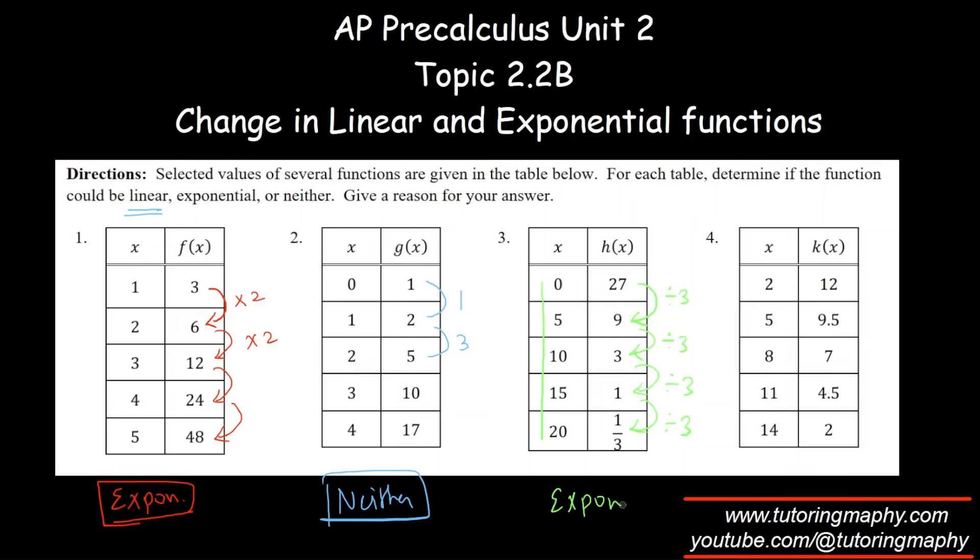Finally this one: 2, 5, 8, 11, 14—yes, increasing by 3. And the difference: 9.5 minus 12 is negative 2.5, 7 minus 9.5 is negative 2.5, 4.5 minus 7 is negative 2.5, 2 minus 4.5 is negative 2.5. Excellent, so the difference is the same, so this is a linear function.